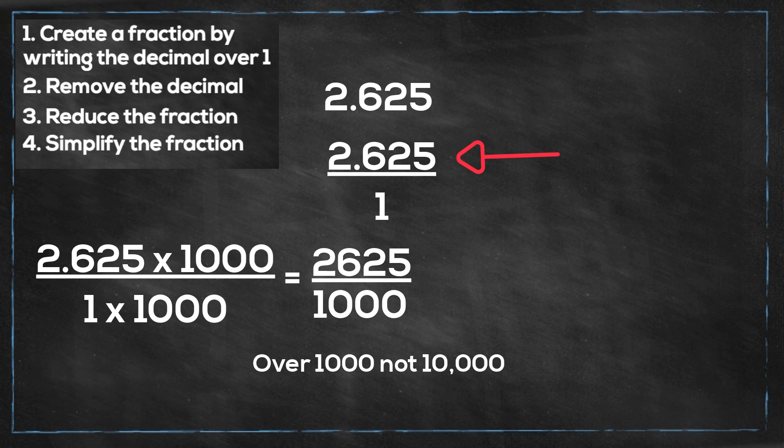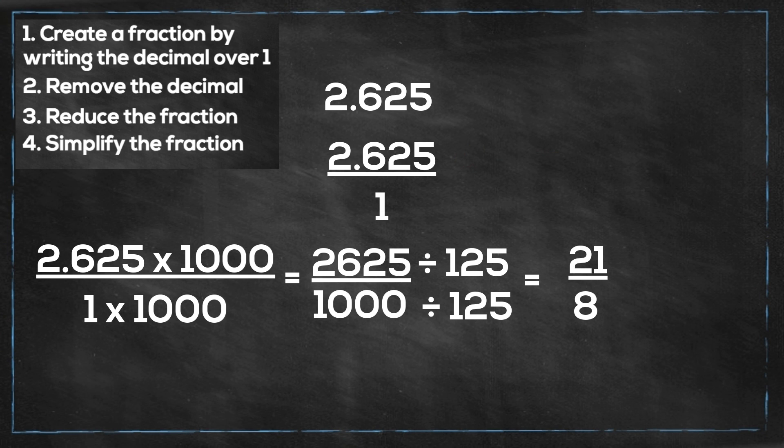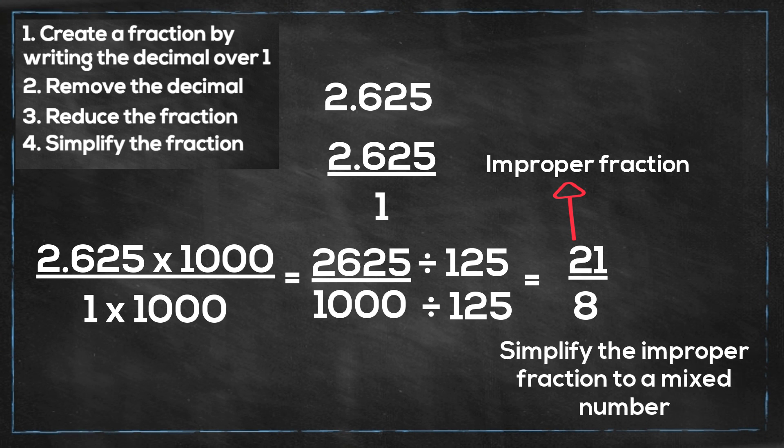Now let's reduce this or simplify that. We can divide the numerator and the denominator by 125. That gives us 21 over 8. And then we can simplify the improper fraction to 2 and 5 eighths.